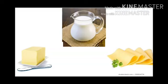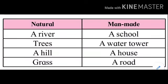More examples of natural products include a river, tree, a hill, and grass — these are all natural things. A school, a water tower, a house, a road — all these are man-made things. We have learned in detail about natural and man-made things. We will come to know later why these are important.